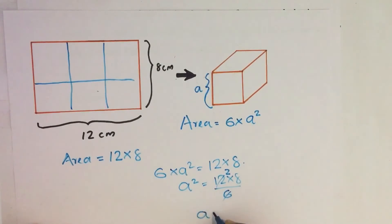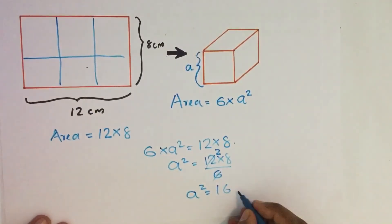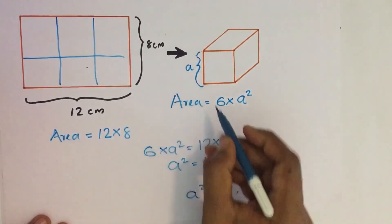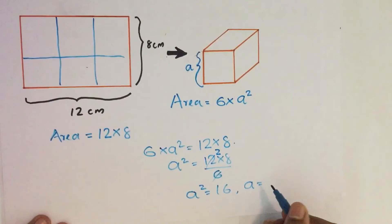We get A square equals 16 and A equals plus or minus 4. But this is a distance, so we take the positive value of 4.